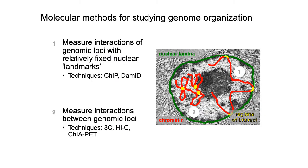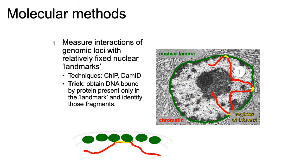The majority of this lecture will be about discussing different experimental assays for measuring genomic loci interactions, which fall into two categories. Either you're measuring the interaction of genomic loci with relatively fixed nuclear landmarks, such as the nuclear lamina — involving techniques like ChIP-seq or DAM-ID — or you're measuring interactions between genomic loci directly, using techniques like 3C or Hi-C.